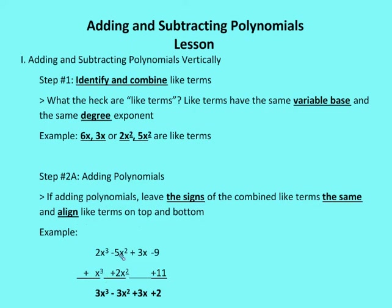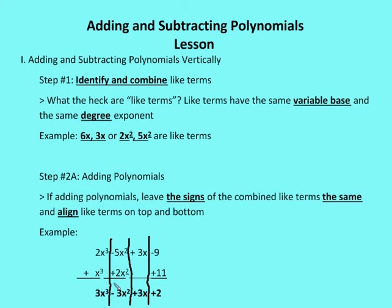I have 2x cubed, x cubed, minus 5x squared, plus 2x squared, plus 3x, nothing on the bottom, negative 9, and plus 11. Then I simply add the two together. Minus 9 plus 11 is plus 2. When adding, there's no carryover — we're just adding as though we're adding single values in each column. So minus 9 plus 11 is plus 2, plus 3x plus 0 is plus 3x, minus 5x squared plus 2x squared is minus 3x squared, and 2x cubed plus x cubed is 3x cubed.